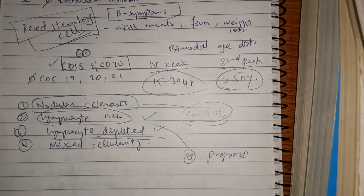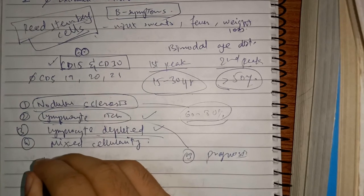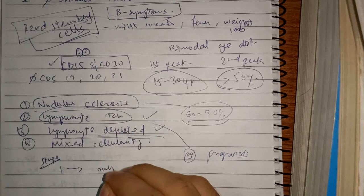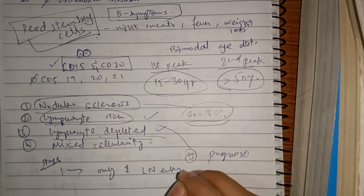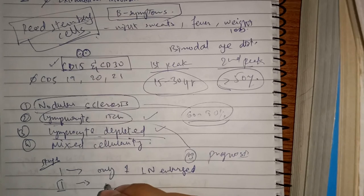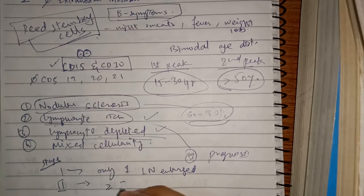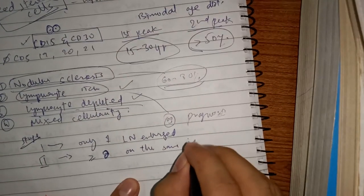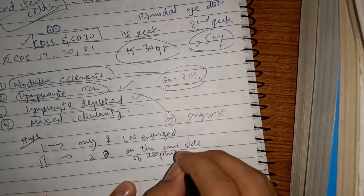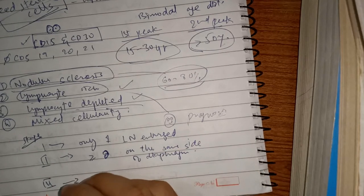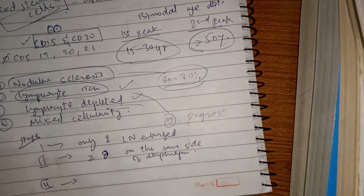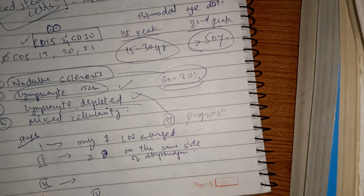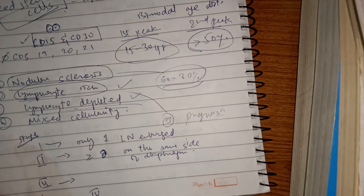Based on the Ann Arbor classification, Hodgkin lymphoma is divided into four stages. Stage I: one lymph node enlarged. Stage II: two or more lymph nodes on the same side of the diaphragm. Stage III: lymph nodes on both sides of the diaphragm. Stage IV: extra-nodal involvement such as bone marrow, GI tract, or skin.